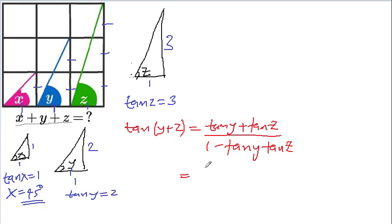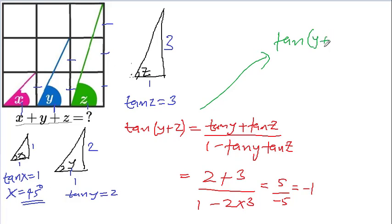And this is going to be, so tan y is, we've just seen that's a 2, tan z is a 3. This divided by 1 minus 2 times 3. So that's going to be 5 divide by negative 5, which is actually negative 1.